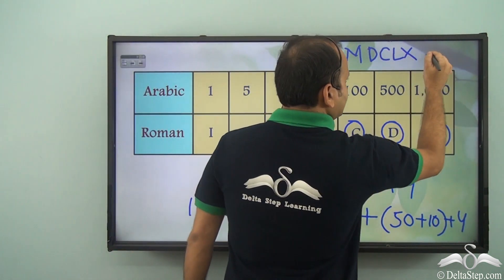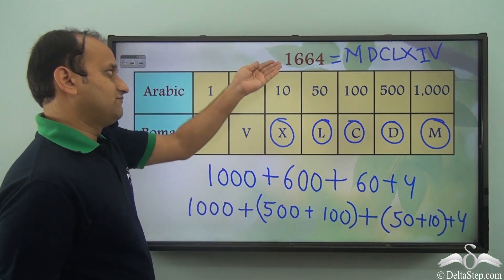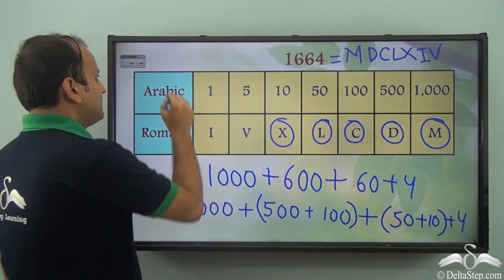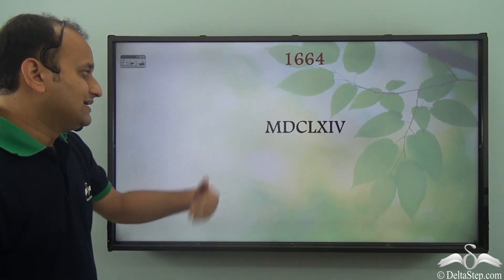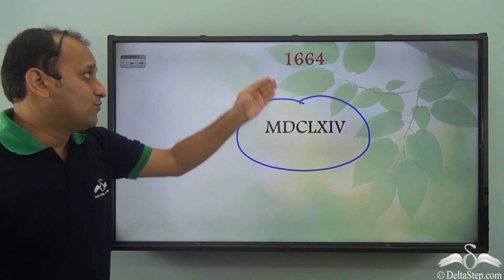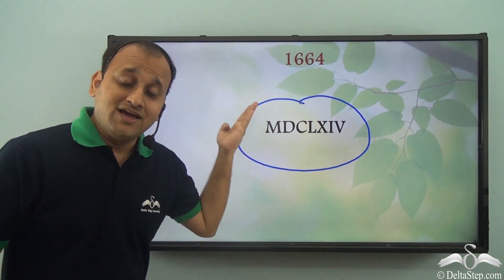How do we write a 4? IV. So when we write 1664, this is how we represent it. So this is the representation of 1664 in terms of Roman numerals.